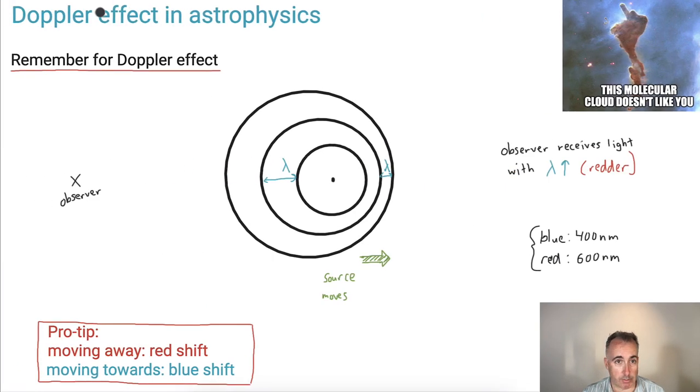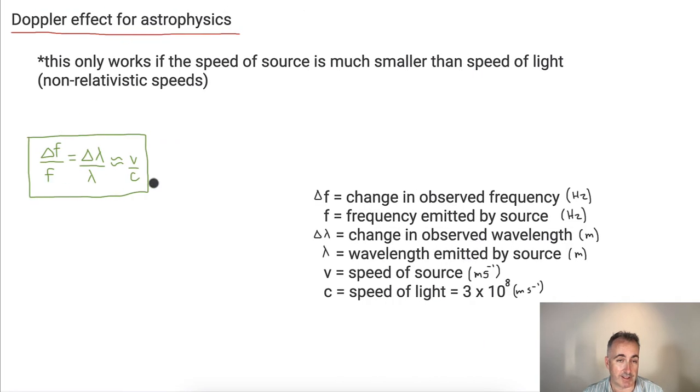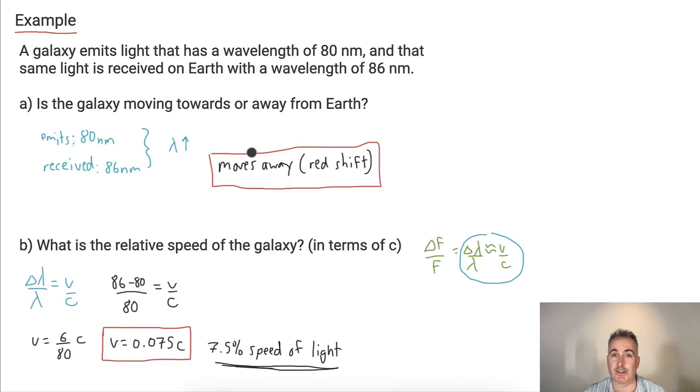So what have we learned? We have learned that Doppler effect in astrophysics, we reminded ourselves that if it's moving away, it's red shifted. If it moves towards, it's blue shifted. That's because lambda is bigger or smaller. And we have this equation, and we're able to use it to actually do some calculations. Congratulations.